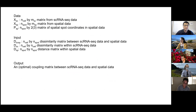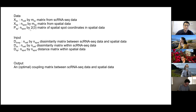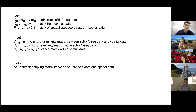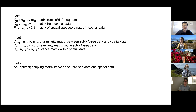As a summary, our original input data looks like three matrices: a cell-by-gene matrix for single-cell data, a spot-by-gene matrix for spatial data, and a spatial coordinate matrix (either 2D or 3D) for the spatial data. We do some preprocessing to get three dissimilarity matrices as input for the optimal transport algorithm: the dissimilarity matrix between cells and spots, the dissimilarity matrix within single-cell data, and the distance matrix within spatial data. The output is the optimal coupling matrix of size n-cell by n-spot.